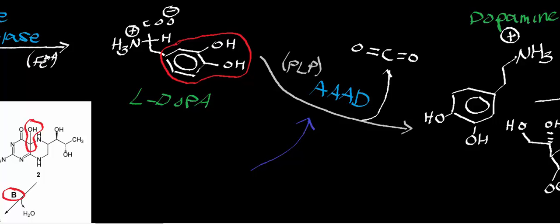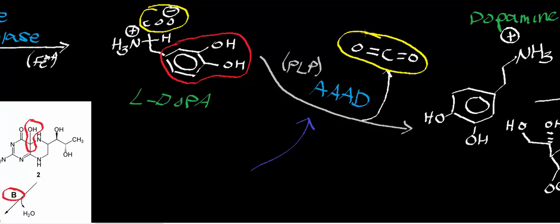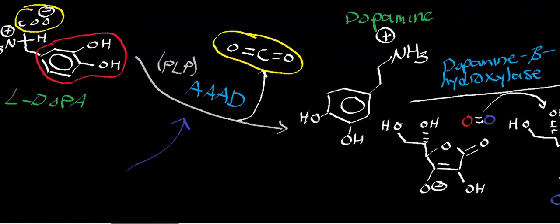What we're going to find is that the later enzymes after this can differ depending on the type of cell. What aromatic amino acid decarboxylase does is decarboxylate the alpha position of L-DOPA — this carboxyl group gets lost as carbon dioxide. This is a pyridoxal phosphate-dependent reaction with exactly the same mechanism as glutamate decarboxylase and others. And what this gives you is dopamine.